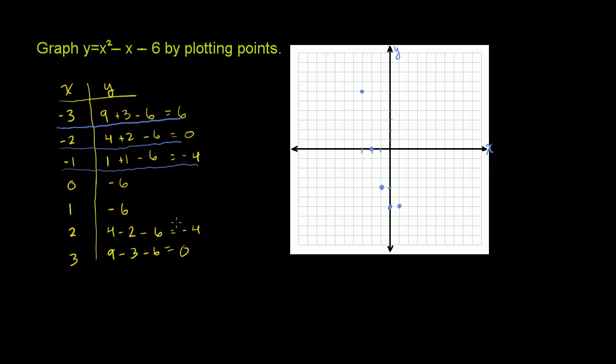And then we have 2, negative 4. So x is 2, y is negative 4. And x is 3, y is 0. As you can see, if we just connect these plots, we get a bit of a curve. We get a bit of a U shape.